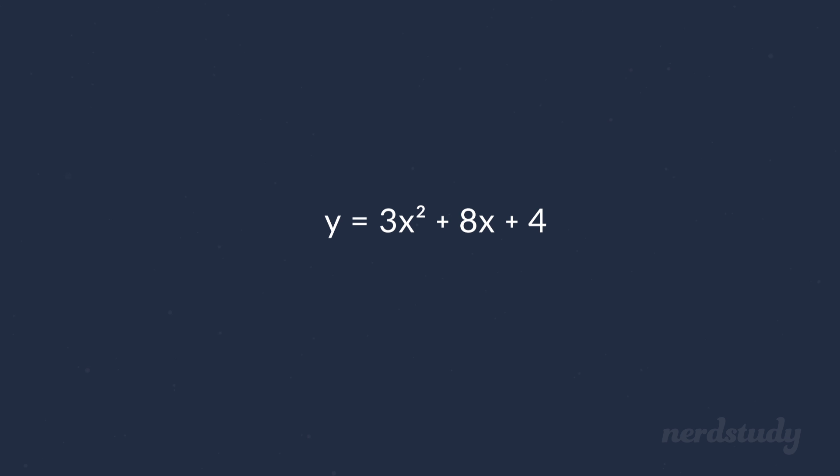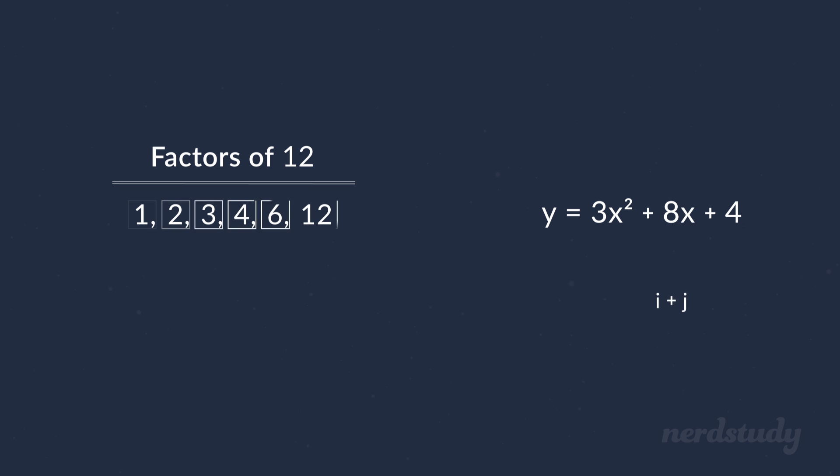In a situation like this, you need to multiply A and C together, which is 3 and 4 to get 12. Then, we want to find all the factors of 12, which are 1, 2, 3, 4, 6, and 12, and see which two numbers can be added together to equal B, which in this case is 8.